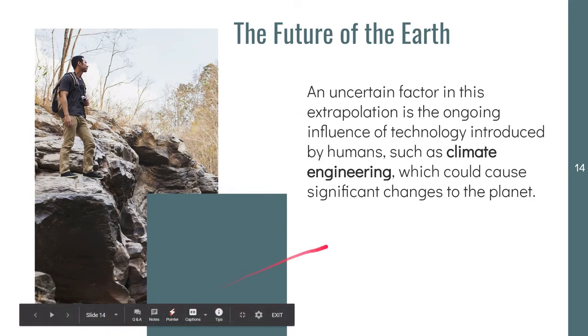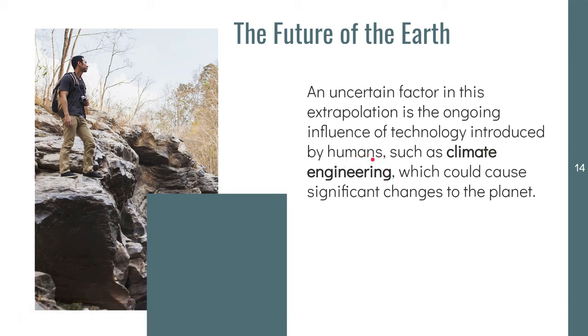One important factor that we have to consider is the influence of technology being introduced by humans, such as climate engineering. I've mentioned desertification and human activities influencing soil erosion in the previous videos. All the activities—climate change, loss of biodiversity, hastening of geological processes due to human activities—are actually causing significant changes to the planet.